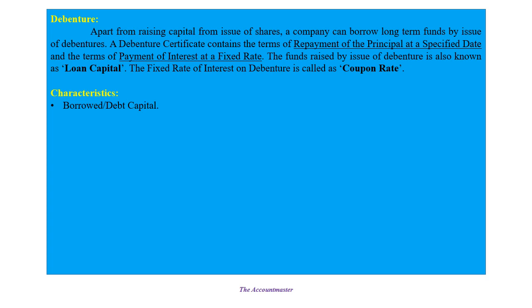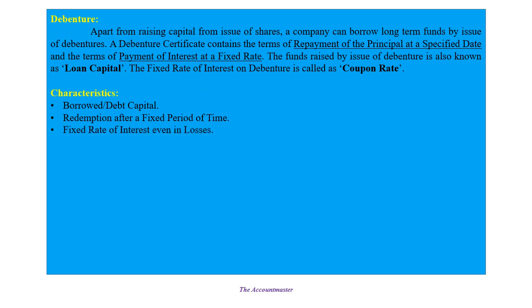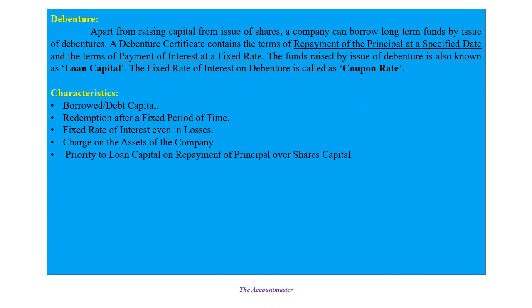Debenture is borrowed capital — borrowed capital means capital on which creditorship is guaranteed. Redemption happens after a fixed period of time. Fixed rate of interest will be given even in the case of loss. Debenture is charged on the assets of the company. Priority is given on repayment of loan capital principal over share capital — meaning debenture is repaid first, share capital is repaid later.